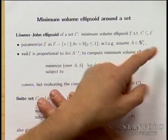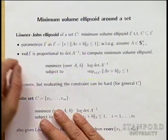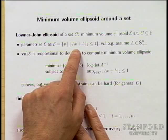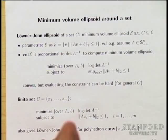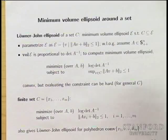The Löwner-John ellipsoid is unique, and by formulating this as a convex problem we'll prove that right away. We'll parametrize the ellipsoid as the inverse image of the unit ball under an affine mapping. There are at least four or five totally different parametrizations of an ellipsoid: as a quadratic form, as the forward image of an affine mapping of the unit ball, as a sublevel set of a quadratic function, and so on.